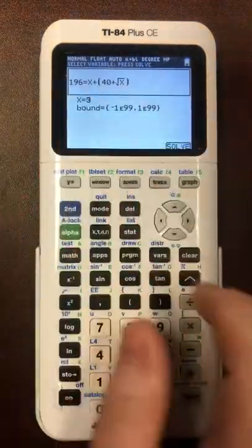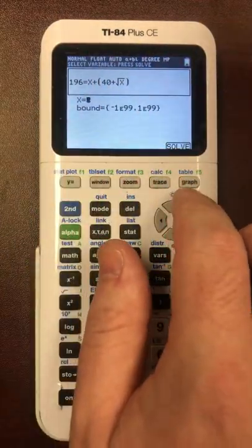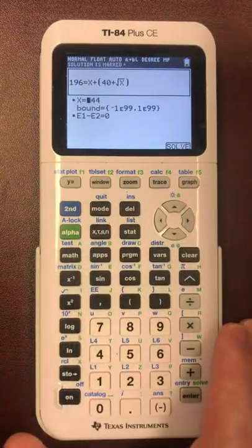Now the answer is not three. That's just a random value that will show up there. You have to hit the button again, the same button, graph, to solve it. And it gives you 144.